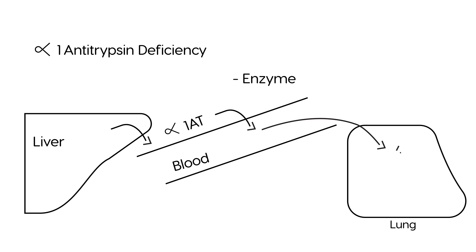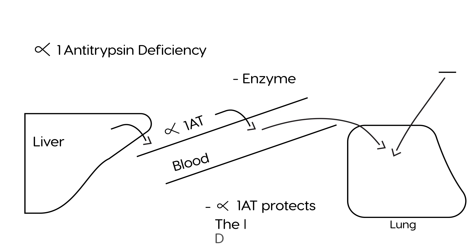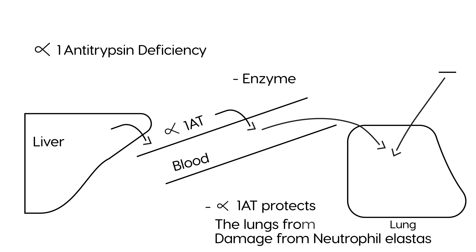Alpha-1 antitrypsin goes to the lung and its function there is to protect the lung from damage — specifically from something called neutrophil elastase, which I'll abbreviate as NE. Neutrophil elastase is a protease that white blood cells produce, and a protease by definition is something that breaks down protein.